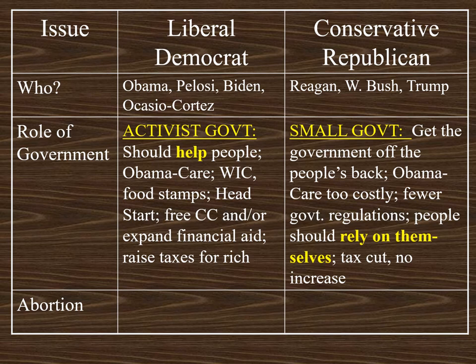Conservative Republicans would take a different approach. They would argue the government's not part of the solution — the government's part of the problem. Get the government off the people's back. There are too many regulations and too many taxes right now. Obamacare is far too costly. People need to rely on themselves and pull themselves up by their own bootstraps, not depend on the government. Paying for these programs by taxing rich people more? Don't we live in a capitalist society? Isn't that actually punishing people who are successful? A conservative Republican would disagree with that approach.